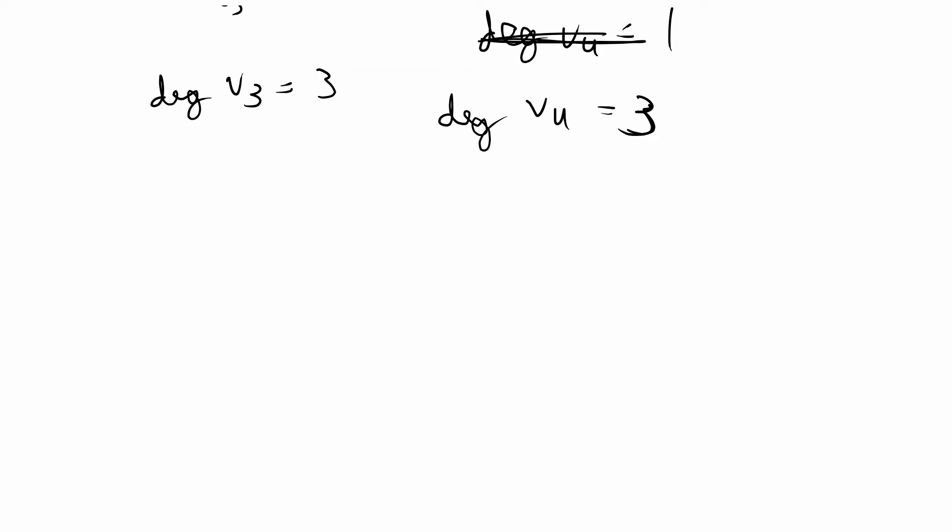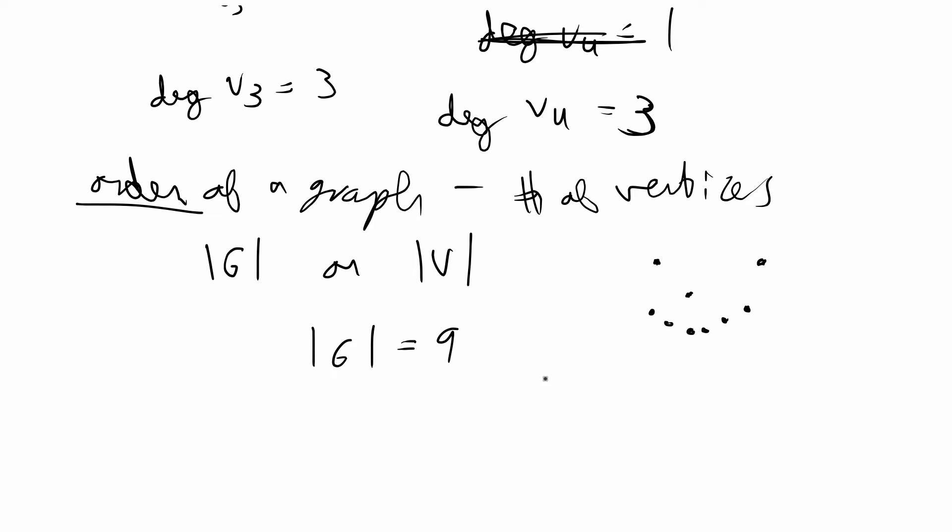We can also talk about the order of a graph which is the number of vertices of a graph. If you have a graph G, it's sometimes written like this or you can see it written like this where V stands for vertices and G stands for the graph. This is pretty self explanatory. If you have a graph like this then this would be 1, 2, 3, 4, 5, 6, 7, 8, 9. The order of this would be equal to 9.